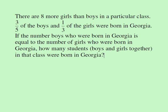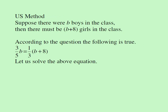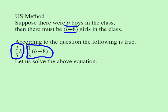So let's move forward and look at the algebraic method — we are going to call it the US method. We are going to start with our assumption that there are b boys in the class. The question says there are eight more girls, so there must be b plus eight girls. The question also says three-fifths of the boys is the same as one-third of the girls, so this gives us our equation.